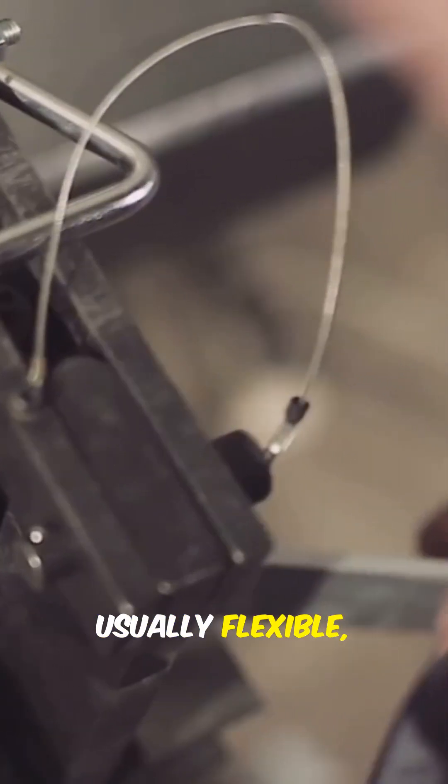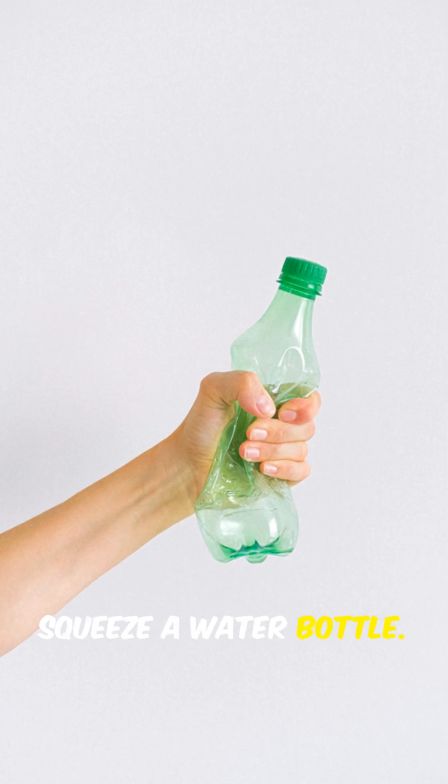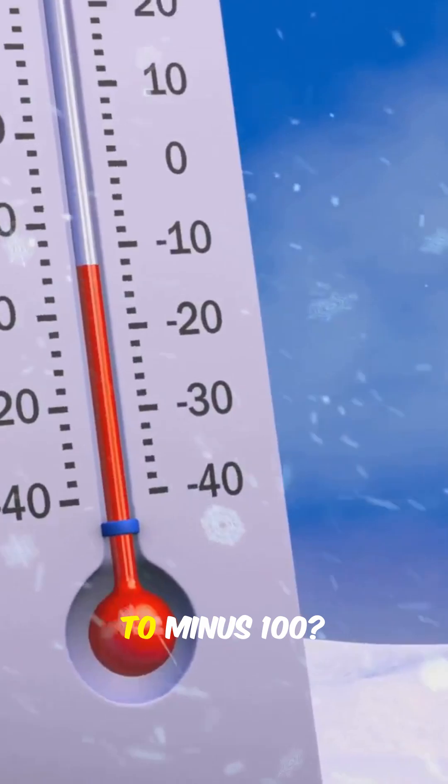At room temperature, plastics are usually flexible, right? You can bend a plastic straw or squeeze a water bottle. But drop that temperature way down to minus 100?